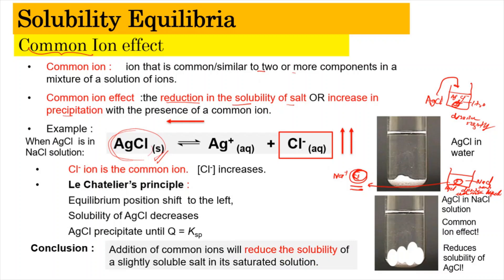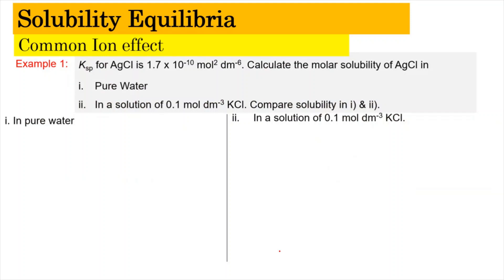Now let us look at an example to prove this mathematically. Example number one: the solubility product for AgCl is 1.7 × 10⁻¹⁰ mol² dm⁻⁶, which is equivalent to S². We need to calculate the molar solubility of AgCl in pure water, and also in 0.1 mol per dm³ KCl solution, then compare the two solubilities.